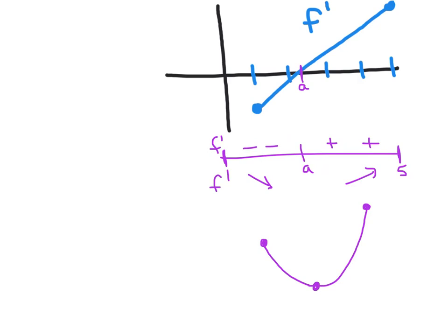It gets a little funkier determining the absolute max, because you wonder whether it occurs at the left endpoint or the right endpoint. The area between the curve and the x-axis tells us the amount of decreasing that f did. Between x equals 1 and x equals a, that area represents how much decreasing f did. The area on the other side tells us how much increasing f did. The amount of increasing far outweighs the amount of decreasing, so the right endpoint is taller than the left endpoint — the absolute max must occur at x equals 5.